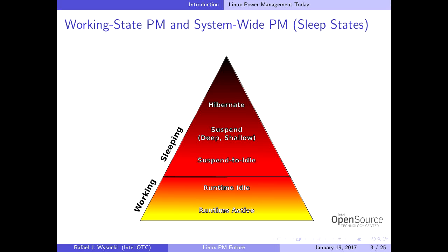That pyramid diagram illustrates the power management support in the kernel at a very high level. There are two types of power management that can be done in Linux. The first one is system-wide power management. The second one is working state or runtime power management.